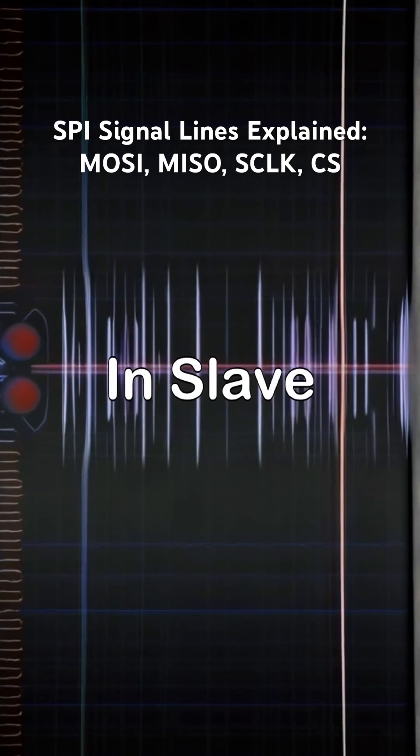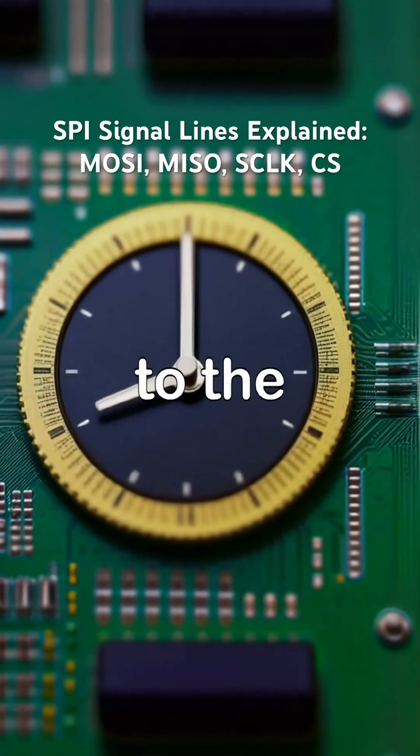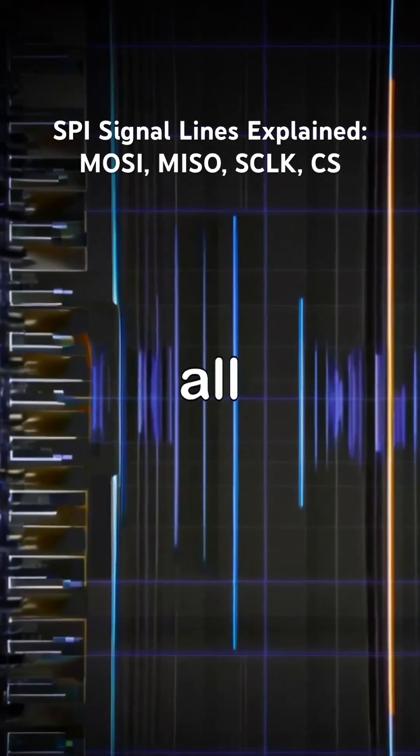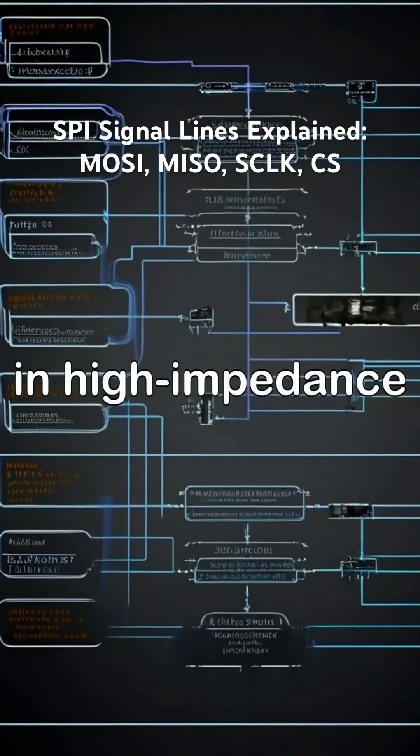MISO, Master In, Slave Out. This line carries data from the slave back to the master. Only the selected slave is allowed to drive this line. All other slaves must keep it in high-impedance state.